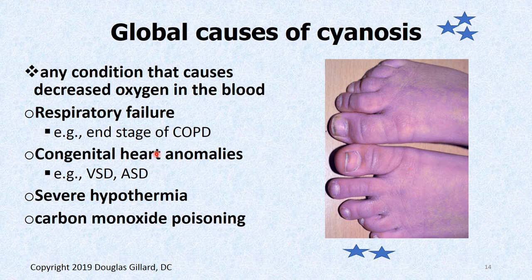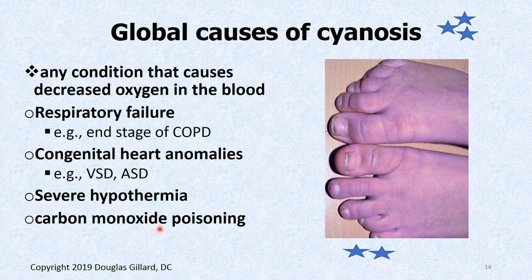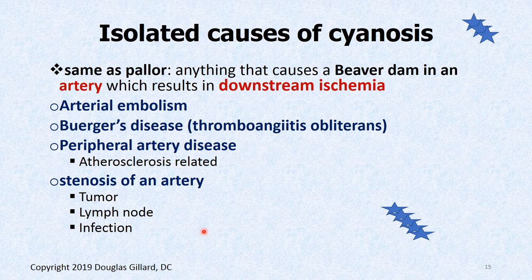Causes of cyanosis include respiratory failure, congenital heart anomalies like VSD and ASD, hypothermia, and carbon monoxide poisoning — although that starts to turn cherry red after a while. Isolated causes of cyanosis include anything that causes a beaver dam — emboli, peripheral artery disease, Buerger's disease — anything that constricts the flow of blood downstream.